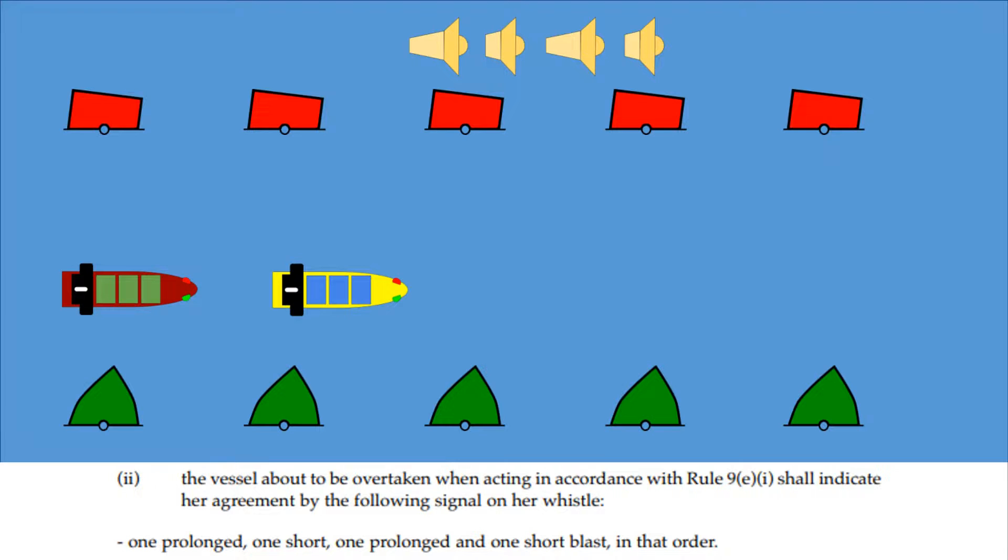The vessel about to be overtaken when acting in accordance with Rule 9E Part 1 shall indicate her agreement by the following signal on her whistle: one prolonged, one short, one prolonged and one short blast in that order. That's the Morse code for Morse Charlie as in confirmed.